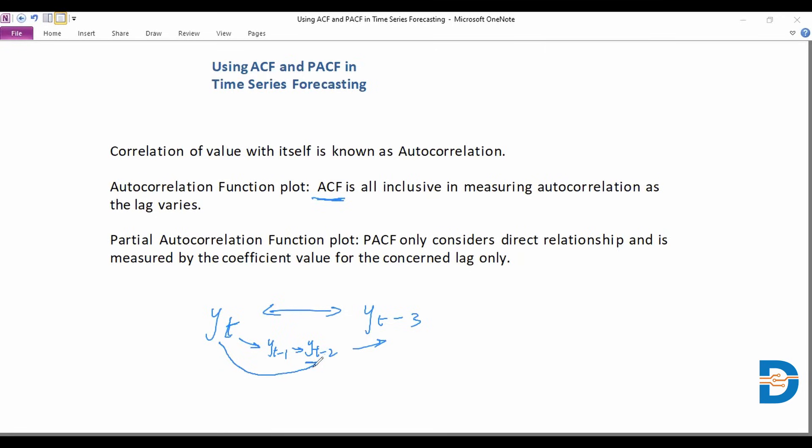There's also a dependency over here, which is all included when we are talking about the ACF measuring the complete correlation between a certain value at time t and a certain value at time t minus 3.